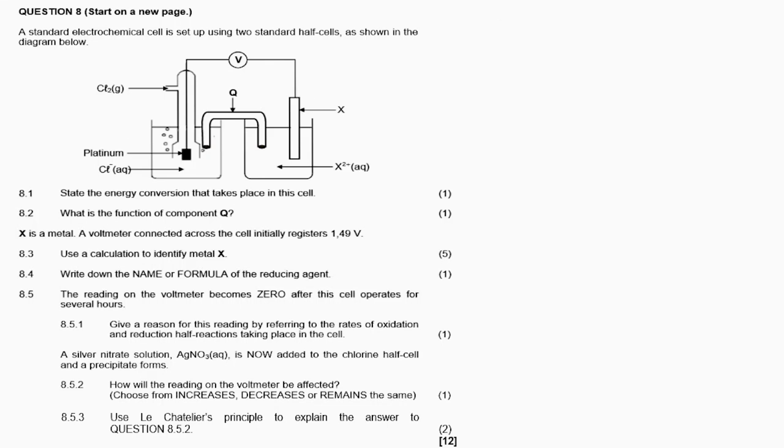Question 8.1 asks: State the energy conversion that takes place in this cell. Since this is a galvanic cell, the energy conversion is chemical to electrical energy.